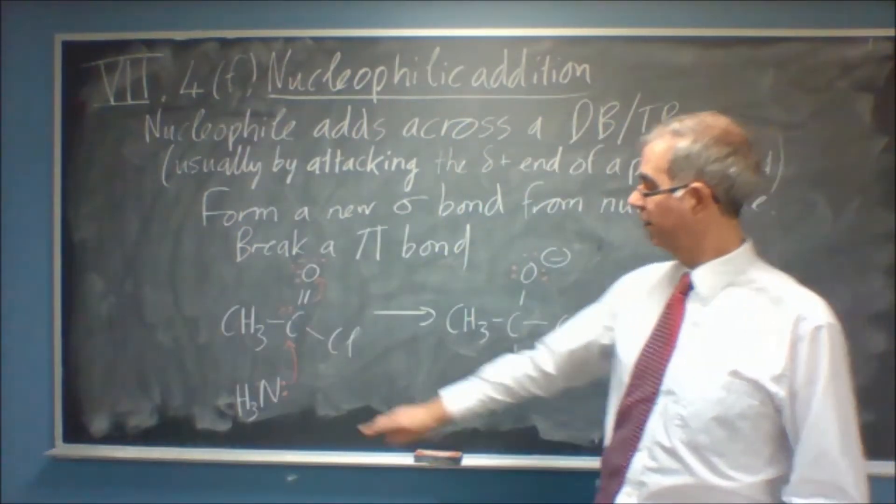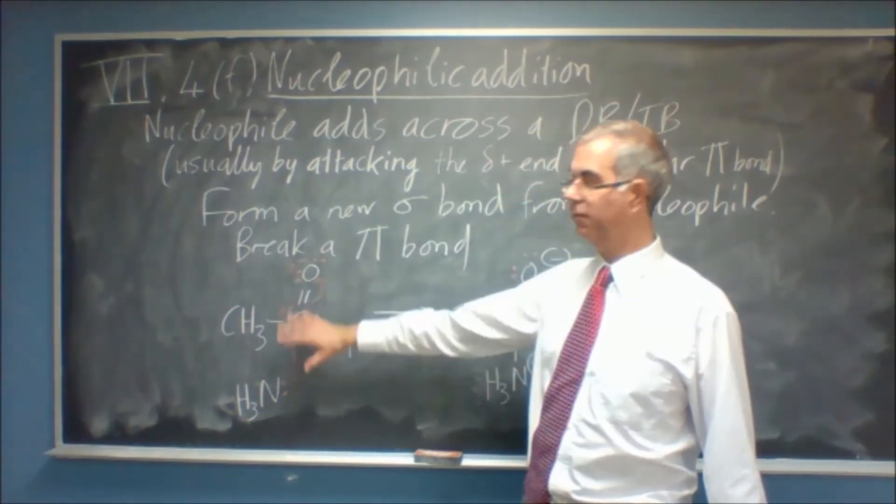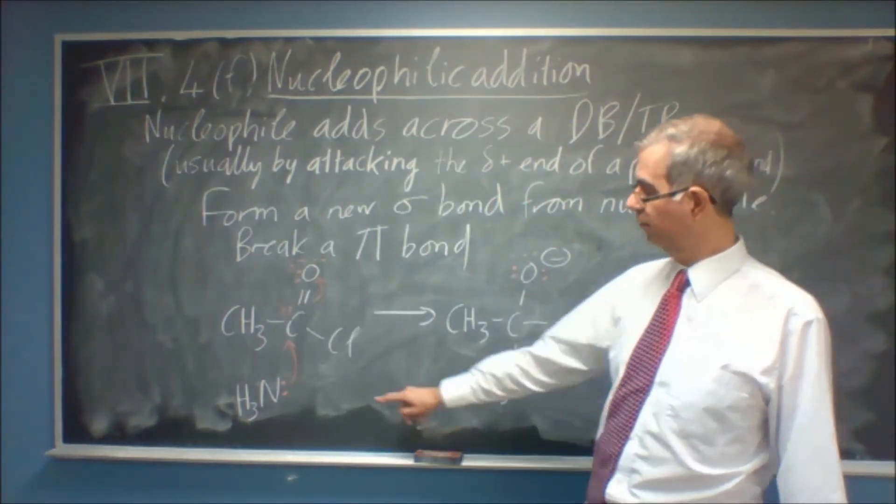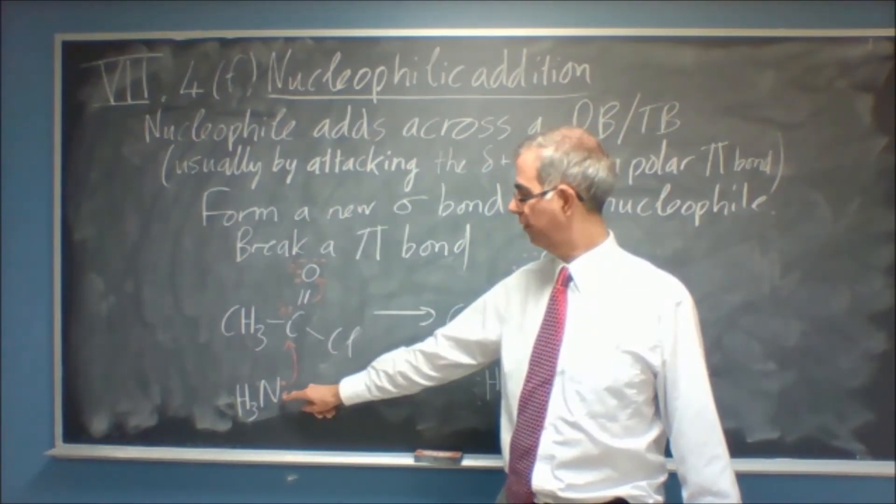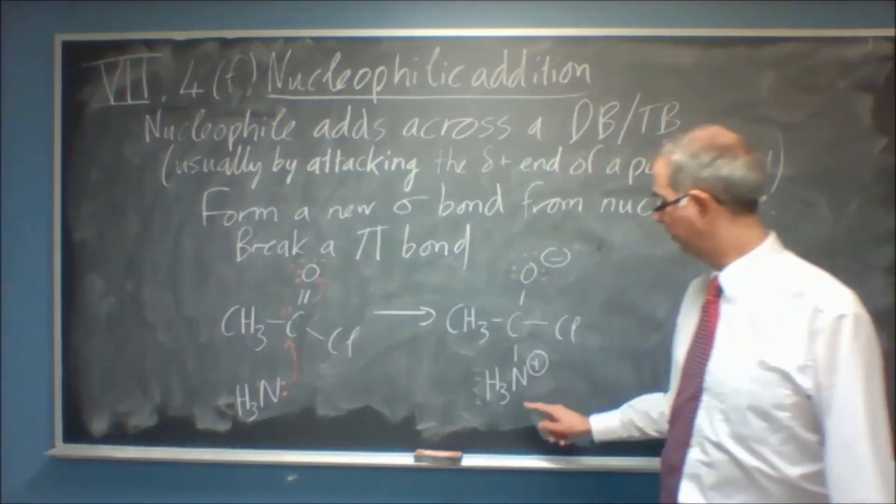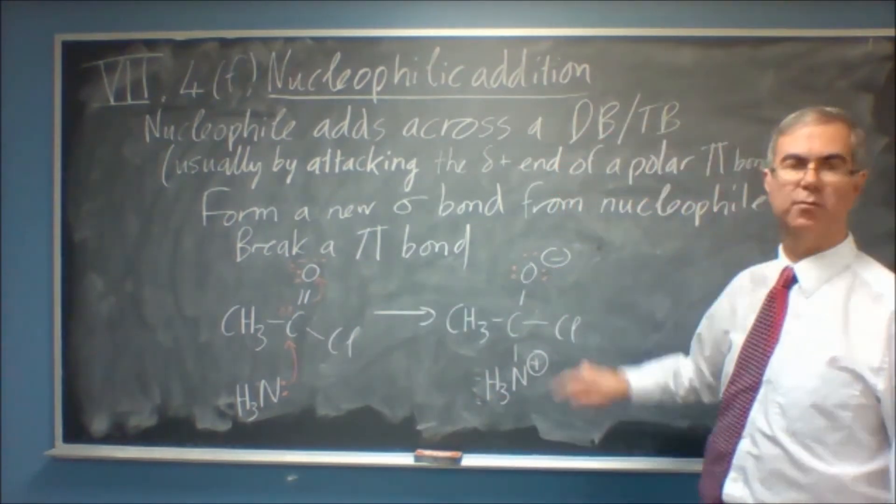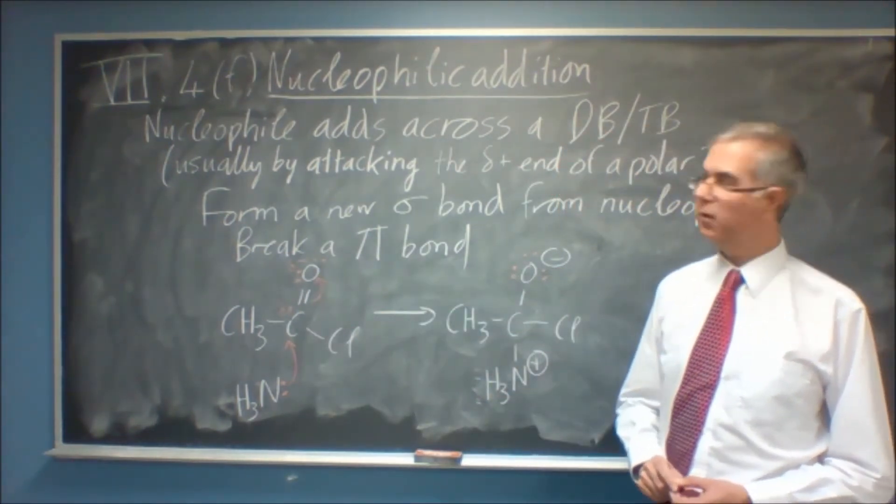Now, here, this is a case where we have everything neutral at the start and we have charge separation at the end. But you can see where the arrows start, it's neutral. It ends at one plus. Where the arrows end, it goes one minus.